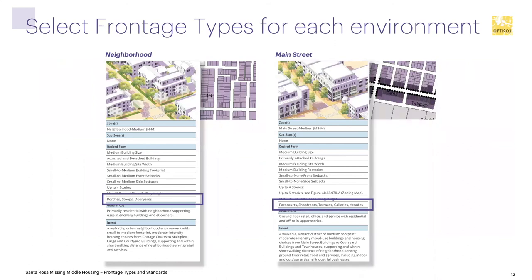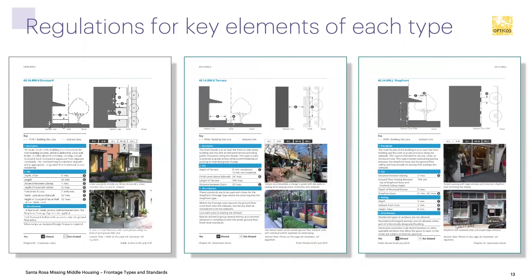Taking that information and coordinating it with the zoning districts and intended physical character, you can apply it to locations on a map, going back to the regulating plan we talked about early on in the series. You can coordinate the intended frontage types to correspond to the physical character and building types allowed in each zoning district. Here are three examples from the eight to ten different types, showing how you provide a section diagram with standards, a plan diagram with standards, illustrative photo examples, the zoning districts each type is allowed in, and the dimensional requirements.